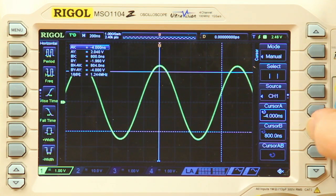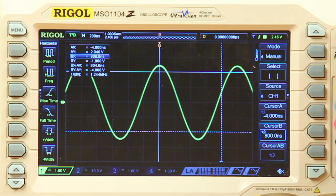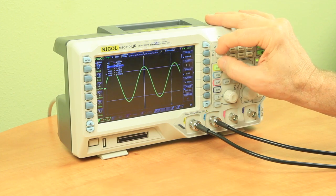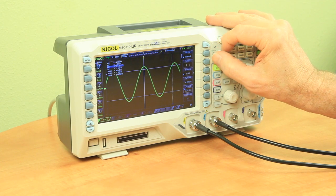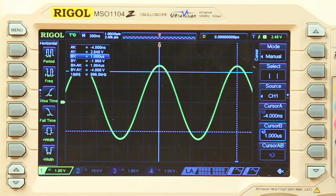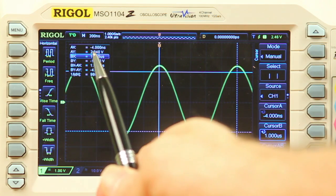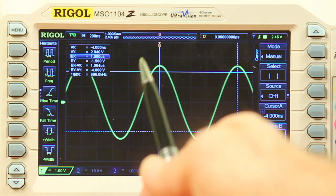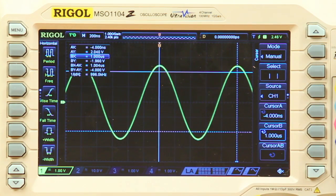And then go to cursor B and take it to the next peak. And now you see that we have 1 microsecond between cursors. So, that agrees with our 1 MHz sine wave.